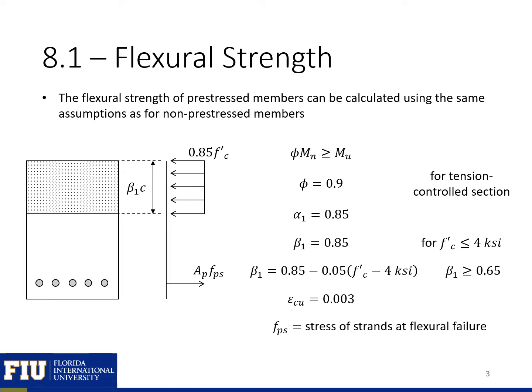We can calculate the flexural strength of pre-stressed concrete members using the same assumptions that we do for non-pre-stressed members. We're going to assume a rectangular stress block which approximates the actual stress distribution in our concrete. This rectangular stress block will have a beta_1 factor which helps us determine the depth, and an alpha_1 factor of 0.85 which helps us determine the magnitude of stress in our stress block. These factors help us ensure we have the same centroid and the same area for our stress block as our actual stress distribution, and we can calculate our beta_1 factor based on F'c.